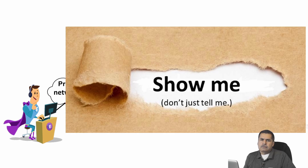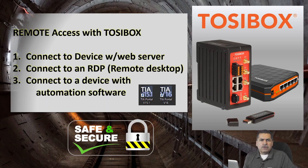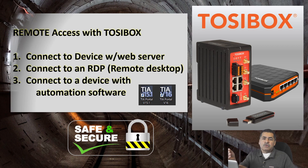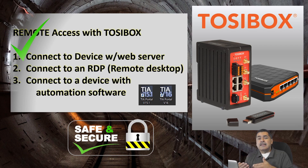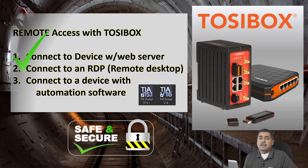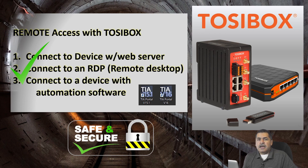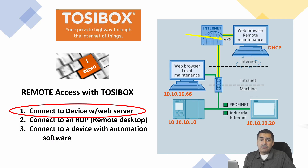Enough talk — it's time to show you how it's done. I'm going to use my TosiBox to connect three different ways and establish a VPN tunnel from my point to a remote site. First, I'll connect to a device broadcasting a web service through a browser using an IP address or URL. Second, I'll connect using RDP or remote desktop. Third, I'll connect using automation software — the TIA Portal from Siemens, version 16.